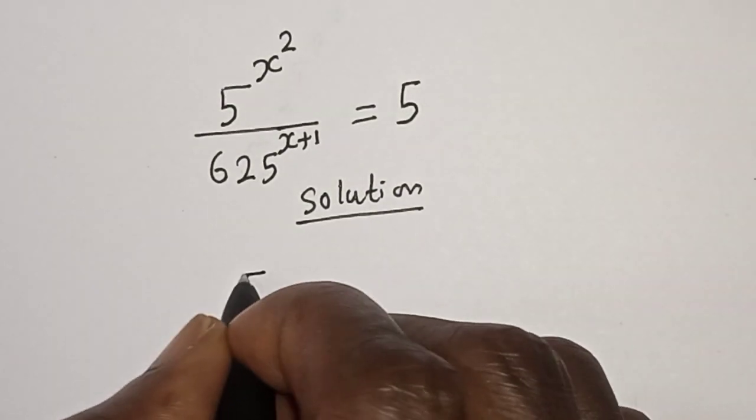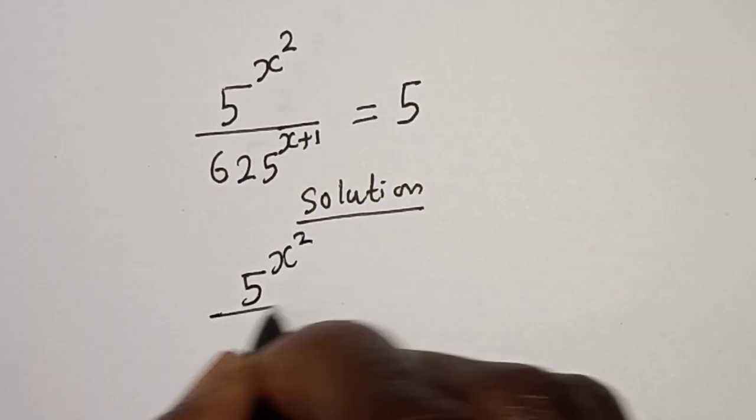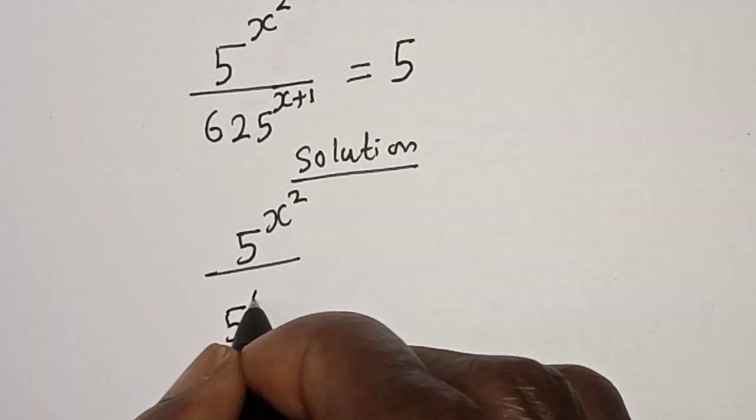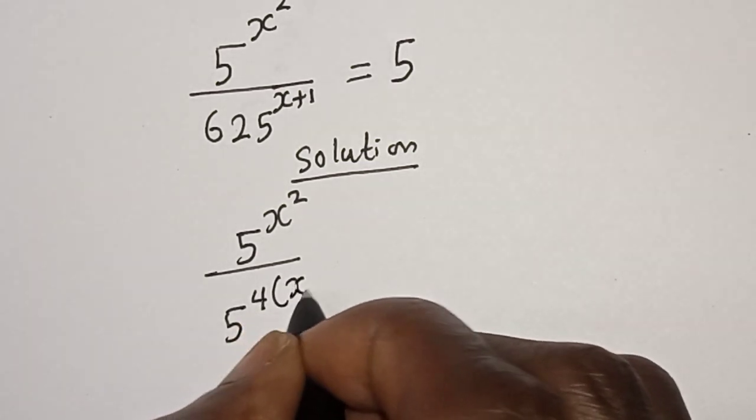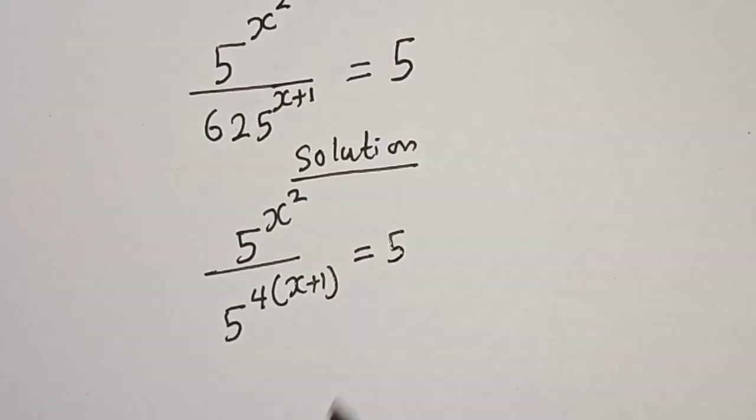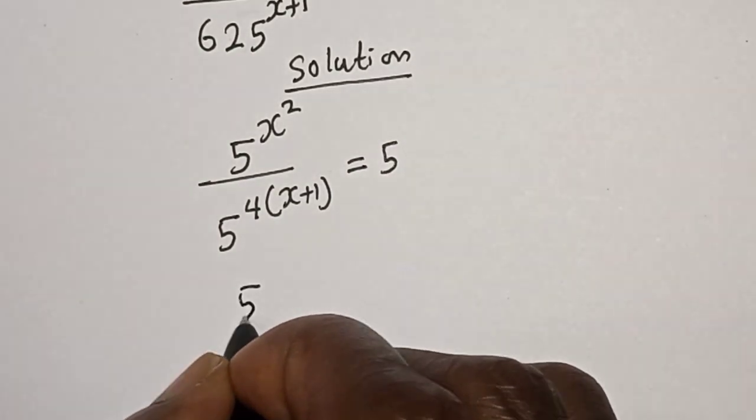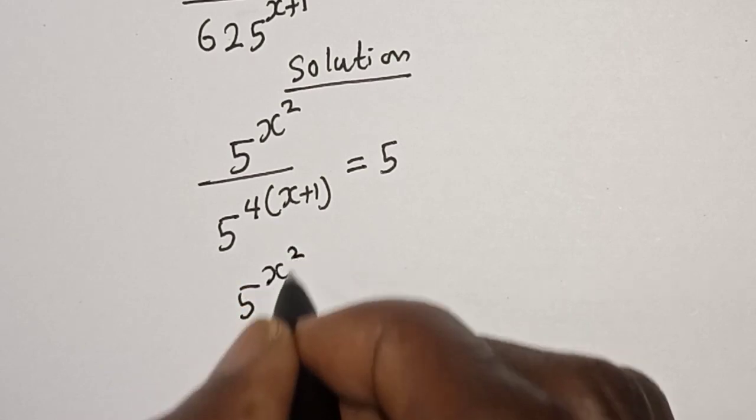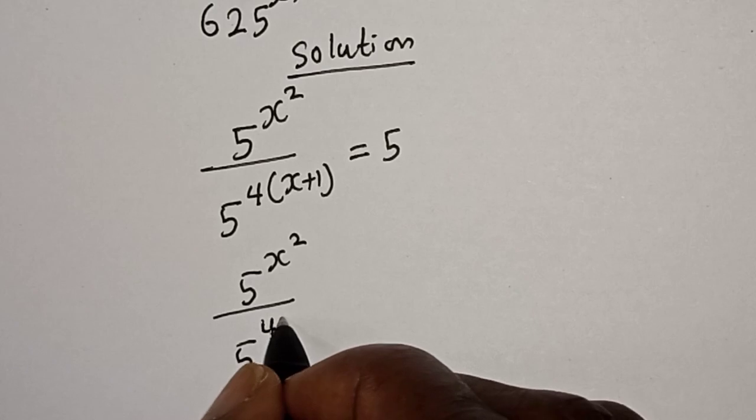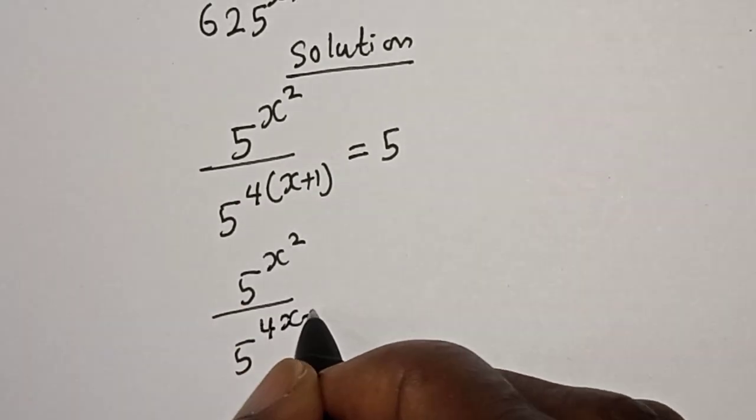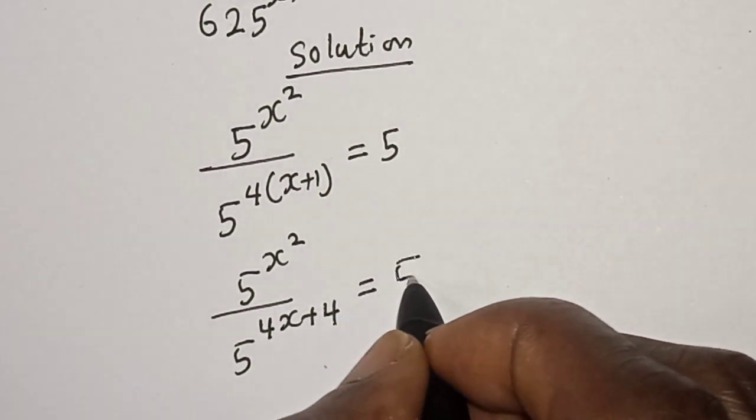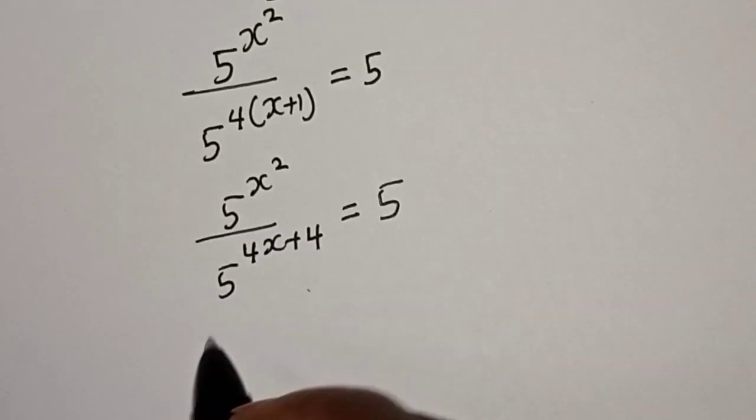Solution: We have 5 raised to power s squared over 625, which can be written as 5 raised to power 4, bracket s plus 1, is equal to 5. And this is 5 raised to power s squared over 5 raised to power 4 times s, that's 4s plus 4 times 1, which is 4, equals 5.